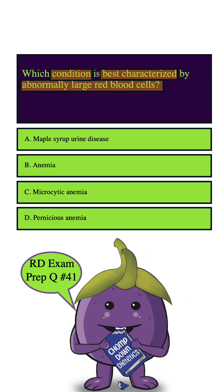Let's start with A. Maple syrup urine disease is not associated with bigger red blood cells, and it's really not relevant to the question at all. So we can eliminate this answer pretty safely.